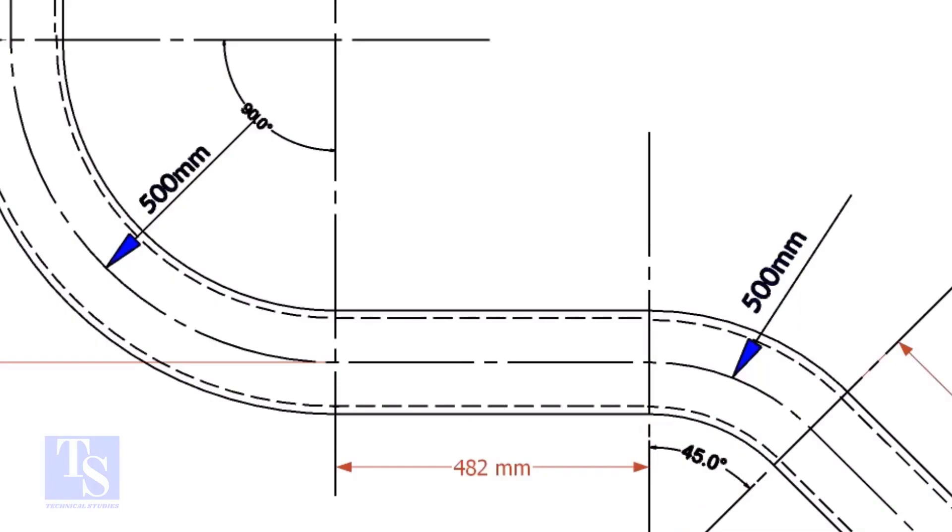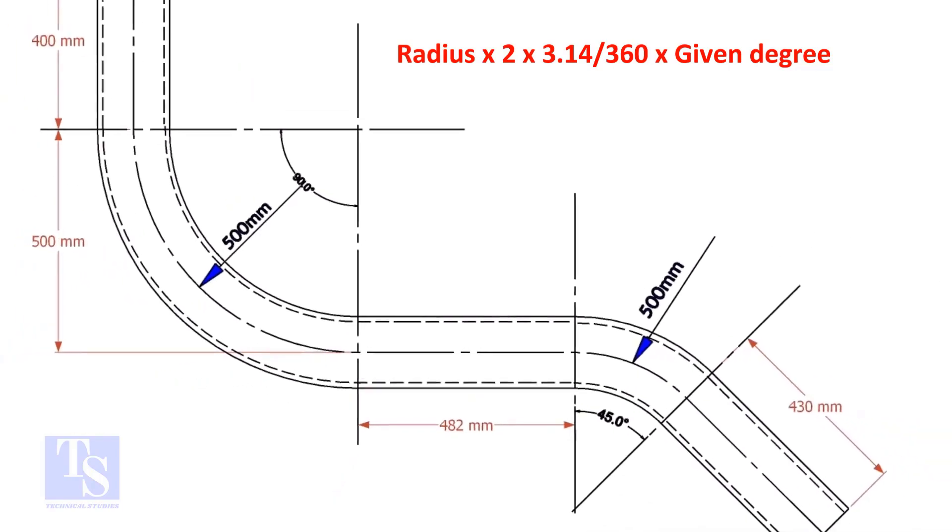Let us calculate the pipe length for the 90 degree. The formula is radius multiplied by 2, multiplied by 3.14, divided by 360, multiplied by the required degree.